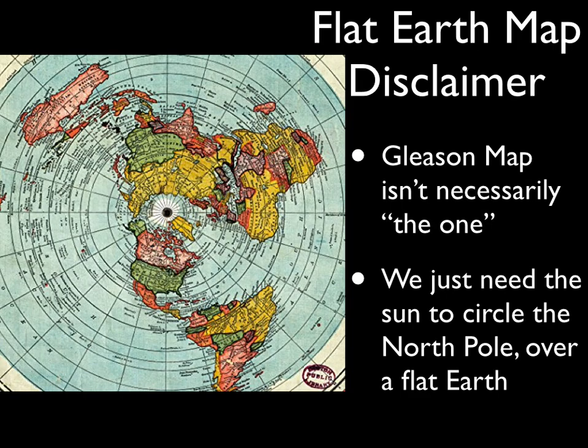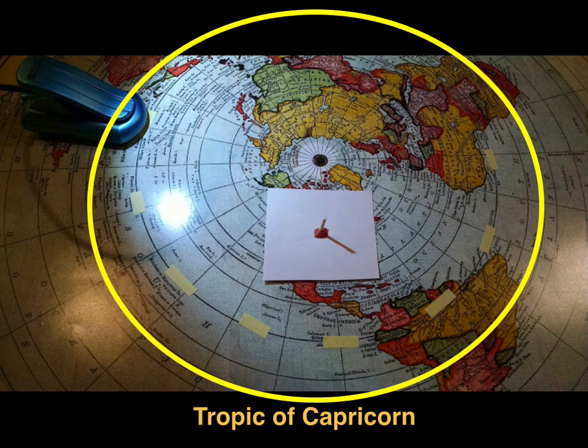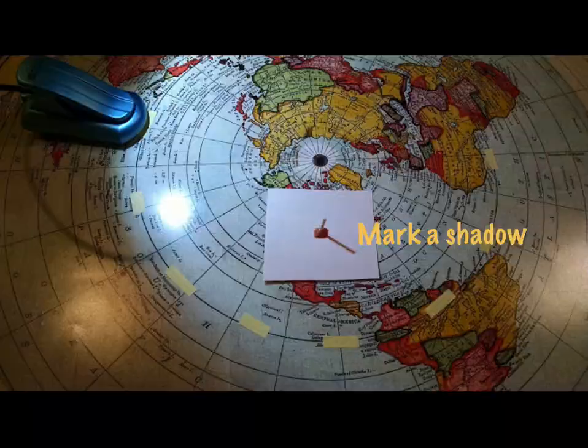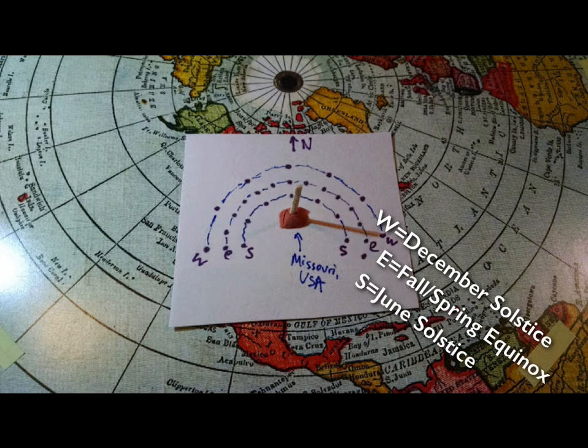Part B: miniature model for the flat earth. I'm going to use a Gleason's map, but the disclaimer is that the Gleason's map isn't necessarily the flat earth map. But that's not really important. All we need is that the sun circles the north pole over a flat earth and it does so over the Tropic of Capricorn. I've got a little card, a poster-sized Gleason's map, and I just took a little book light, a little LED book light. The yellow marks mark the equator. I'm going to trace above the Tropic of Capricorn. I'm going to mark a shadow and I'm going to have a series of marks. I did it every two hours and I marked it with a W because it's the northern hemisphere's winter. But it really is the December solstice.